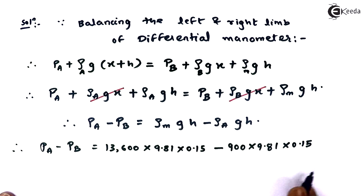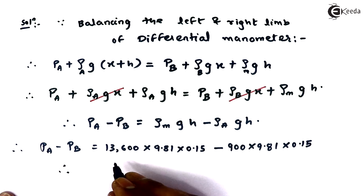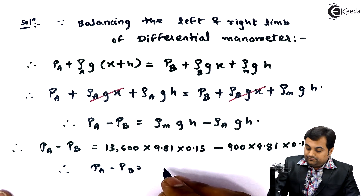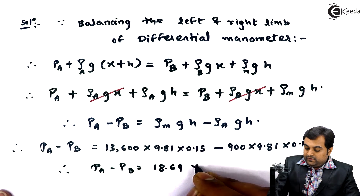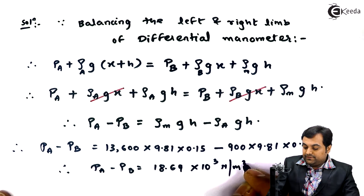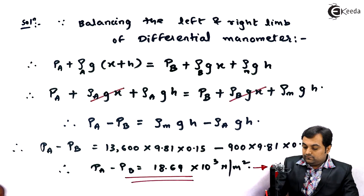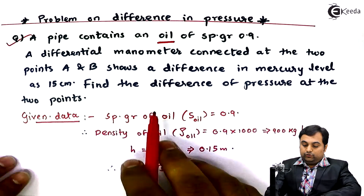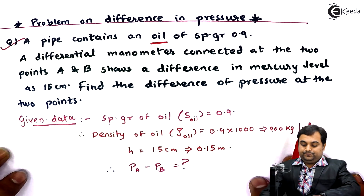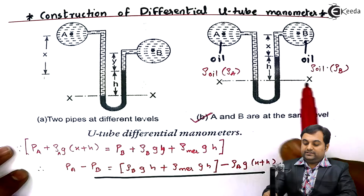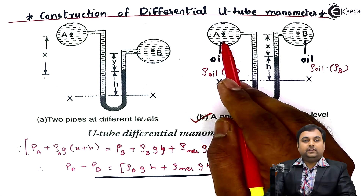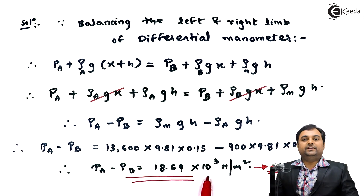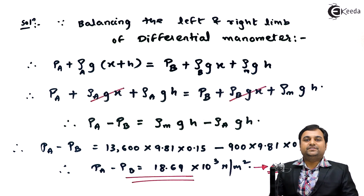Calculating throughout, the answer for P_A minus P_B is 18.69 × 10³ N/m². With this we complete the problem.